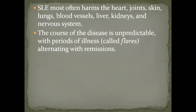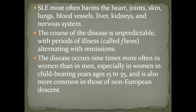Common organs affected by systemic lupus include the joints, blood vessels, kidneys, heart, and nervous system. The course of the disease is unpredictable; it always goes through flares — periods when the disease is active — and periods where disease activity is controlled by medications, which we call remissions.